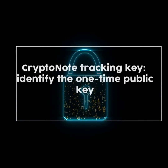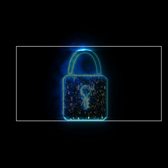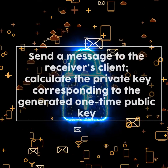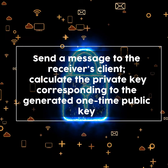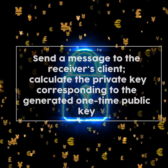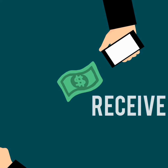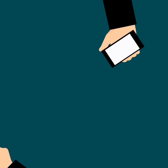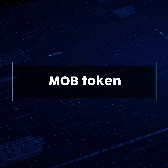A transaction's output values and the key image of the one-time ring signature will then be generated. Next, the MobileCoin node of the receiver uses the CryptoNote tracking key to identify the one-time public key. It will then send a message to the receiver's client and calculate the private key corresponding to the generated one-time public key. Finally, the receiver can successfully receive the payment.